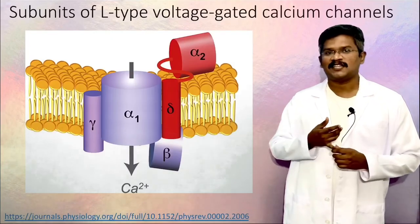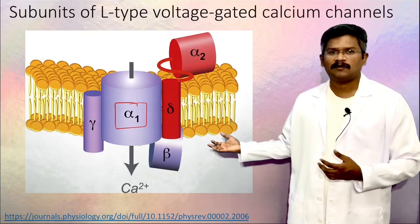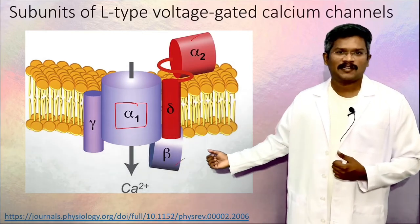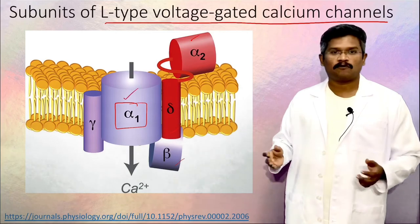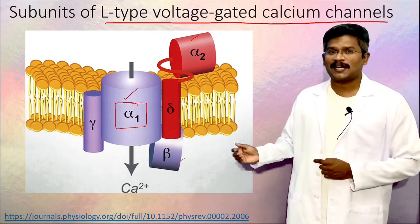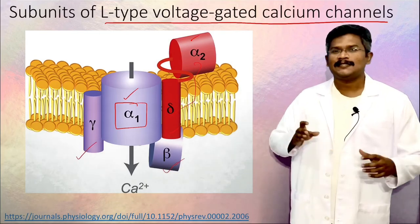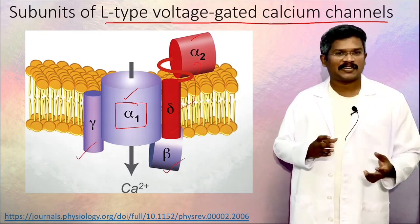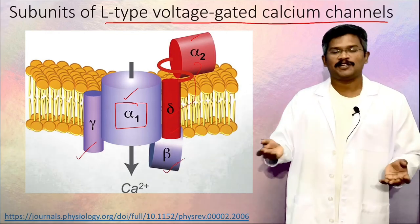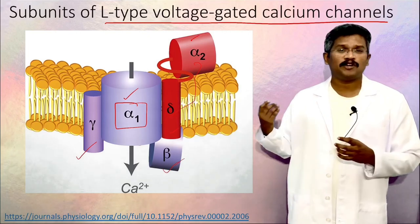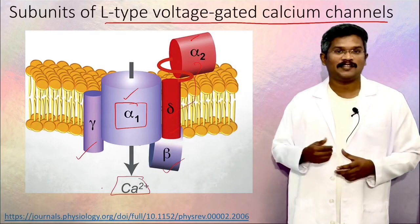Apart from the pore-forming domain which has the selectivity filter and the voltage sensor, a typical ion channel will also have multiple other subunits. Like here, this is a voltage-gated calcium channel L-type. The alpha-1 subunit is the pore-forming domain, but it also has additional subunits like alpha-2 delta, beta, and gamma subunits. These other subunits regulate the activation/deactivation kinetics of the ion channel—like which exact membrane potential the ion should open at and when exactly it should close. These subunits also regulate the conductance, that is, how much calcium ion enters into the cell.